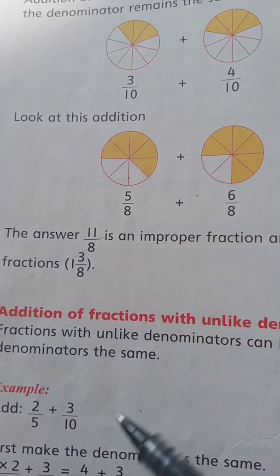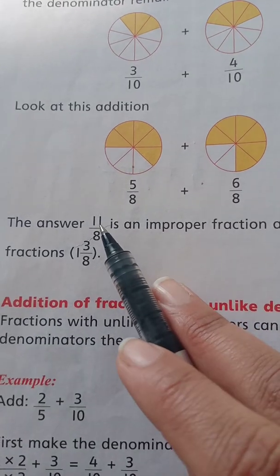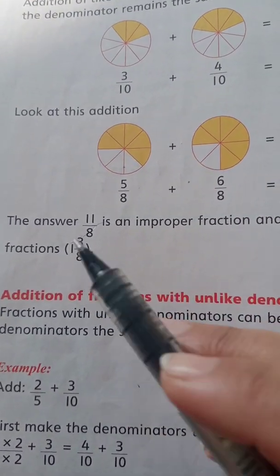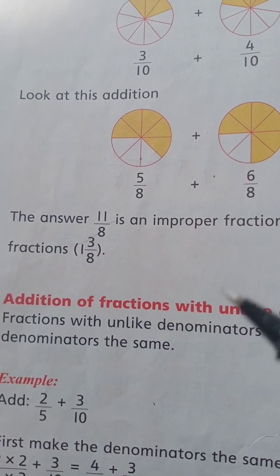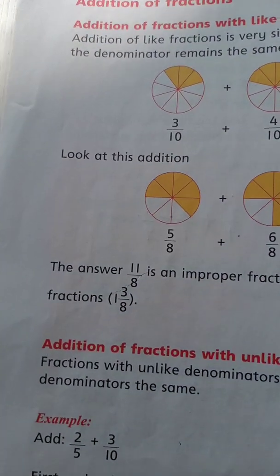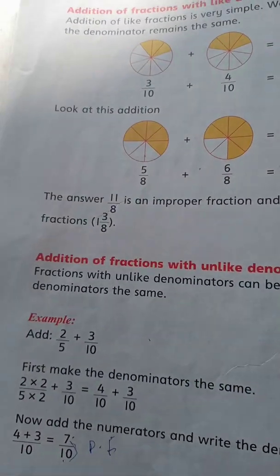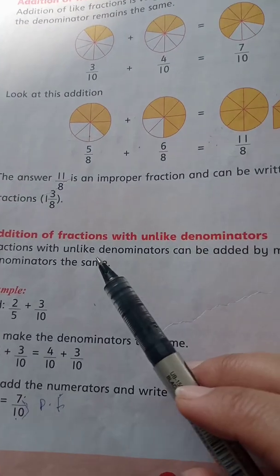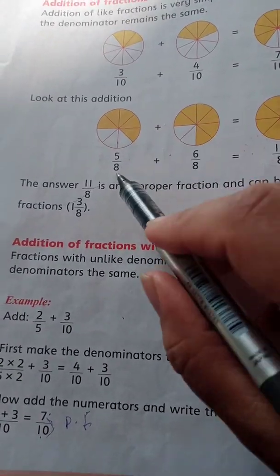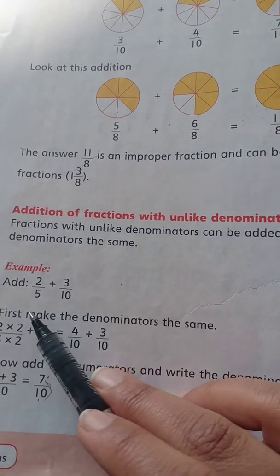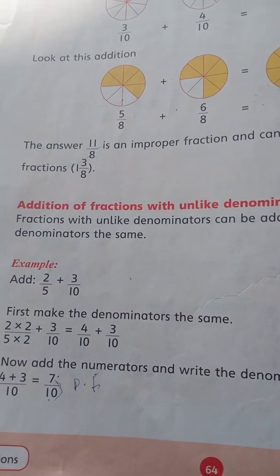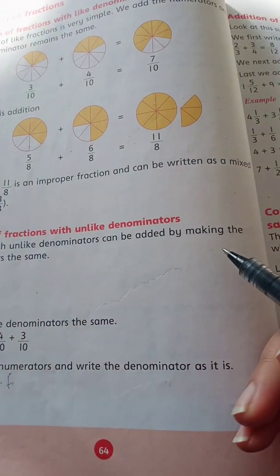Hum answer improper mein nahi dete — usko mixed fraction mein change karke answer likhte hain. Yeh fraction can be written as a mixed fraction. Ab students dekhen: addition of fractions with unlike denominators. Jab yahan denominator same thay — ten tha, eight tha — ab denominator different ho: yahan five hai, yahan ten. Is type ki fraction ko hum kaise add karenge?